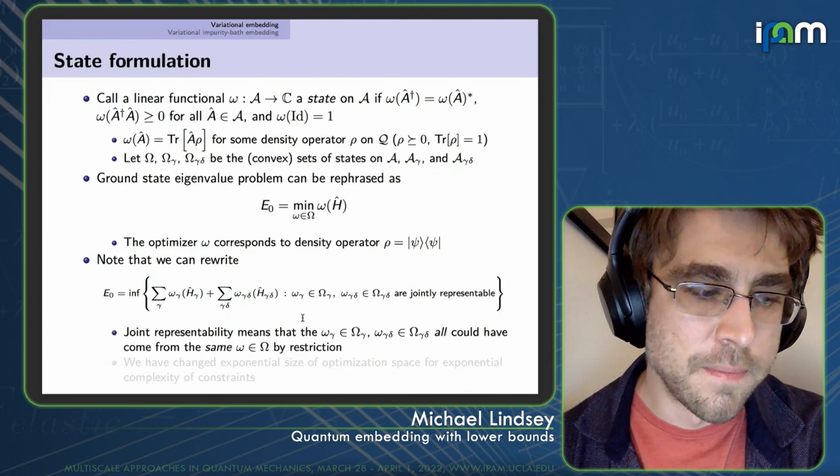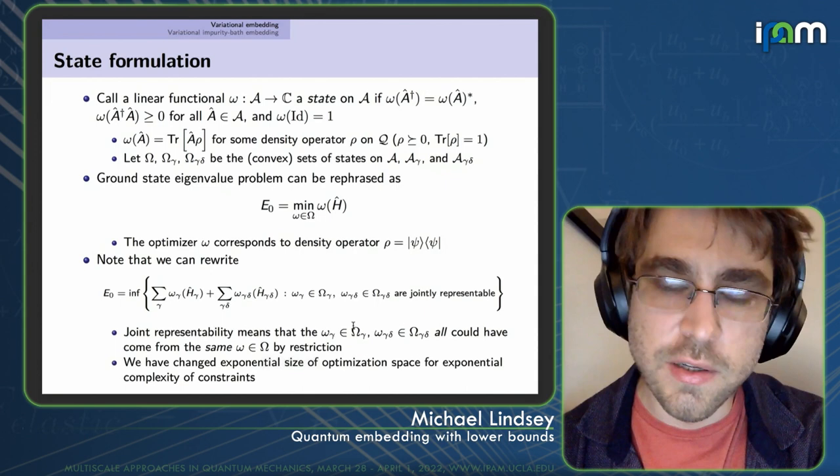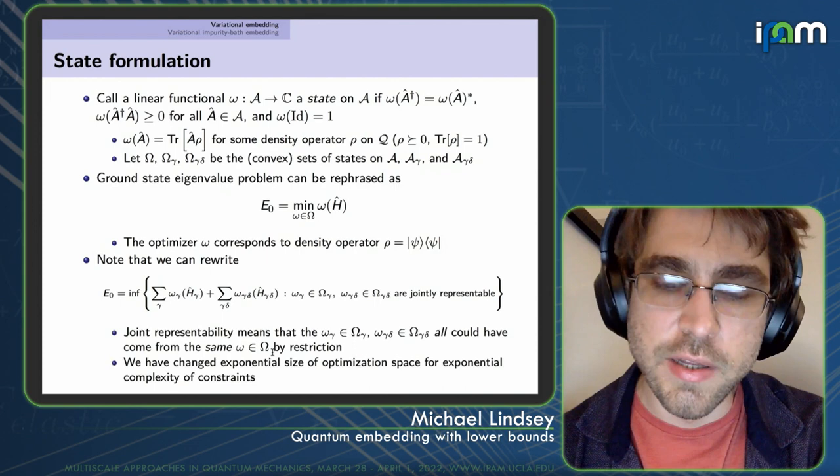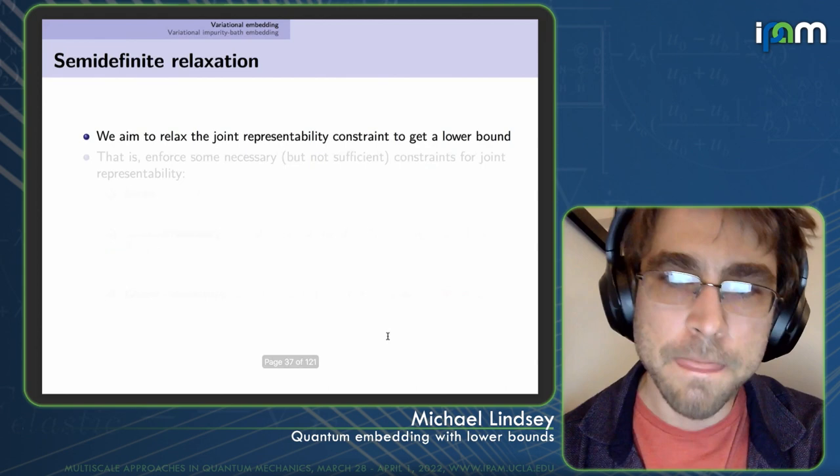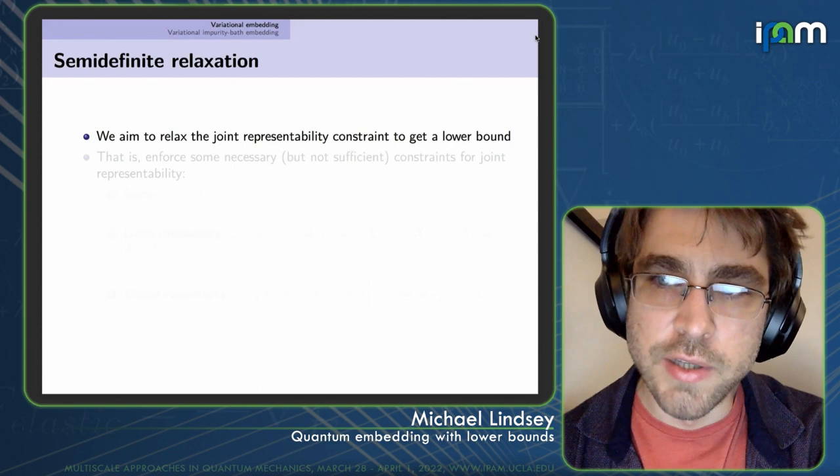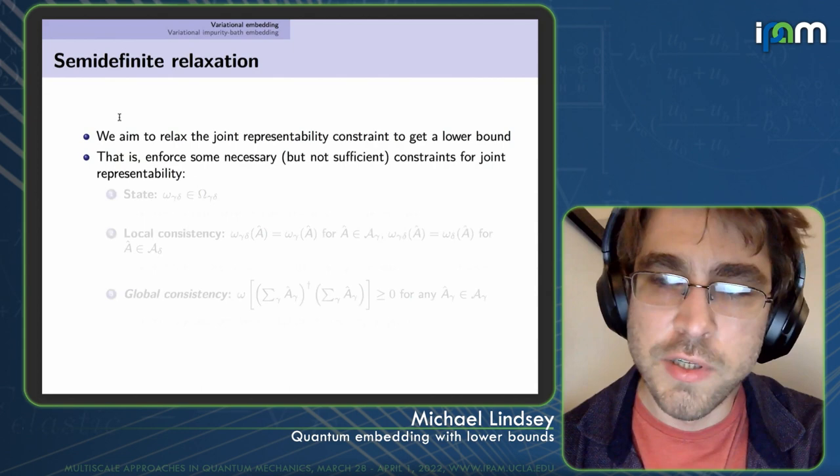By exchanging the difficulty of a high-dimensional optimization space for a difficult set of constraints, we can make progress by enforcing only a subset of these constraints, obtaining a relaxation of the original problem and hence a lower bound. Joint representability means all local states could have come from the same global state by restriction, and we've traded exponential optimization space for exponential complexity.